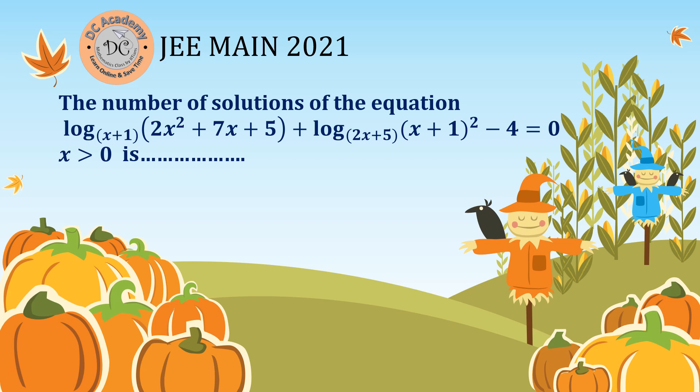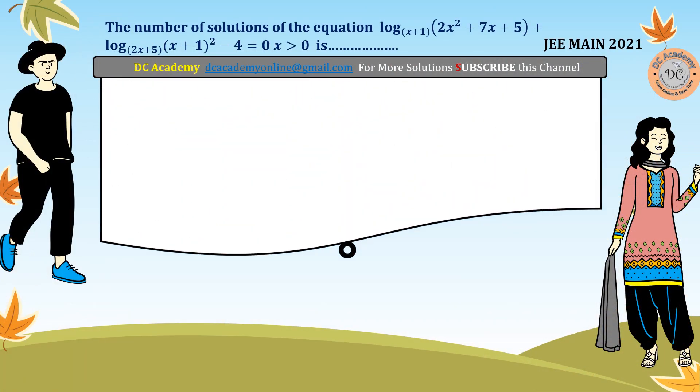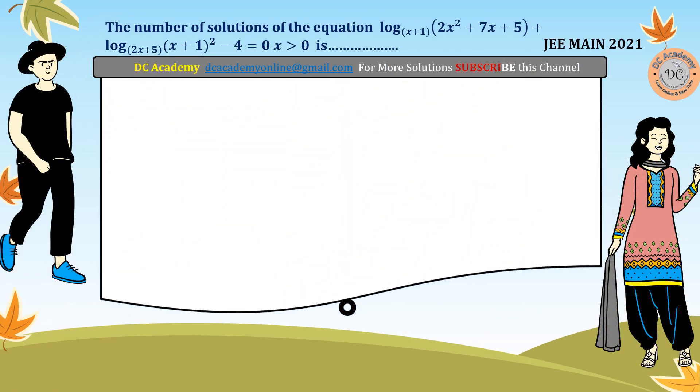Hi, in this video we're going to solve a problem which appeared in the year 2021 in JEE Main. The problem is very simple — we have to find out the number of solutions of this logarithmic equation. We have two log functions and we need to simplify them so that we can find out the value of x. Let's go ahead to the solution section.